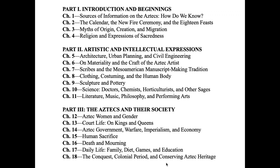Then we move to artistic and intellectual expressions. We'll look at architecture, urban planning, and civil engineering — pretty impressive work. Tenochtitlan, the capital city of the Aztecs, was built basically on water, a little like Venice in Italy. Then we look at materiality — what materials or things in nature did Aztec artists use to make exquisite works of art. Then we look at the manuscript-making tradition in Mesoamerica and the scribes who made them. Many people are shocked to find that the Aztecs had libraries full of books. My dissertation was on Mesoamerican manuscripts.